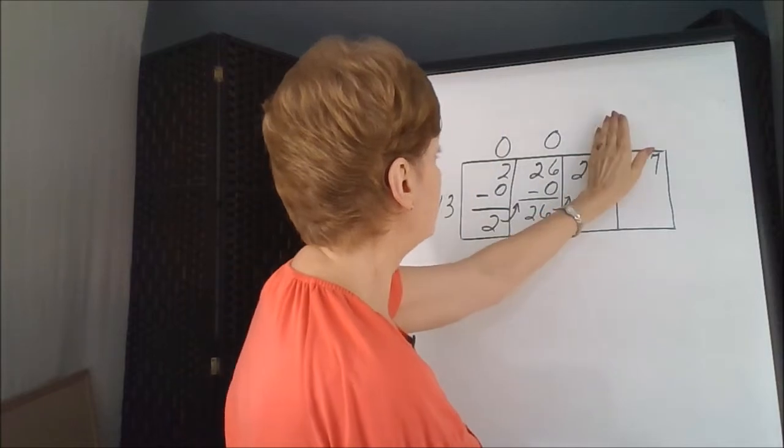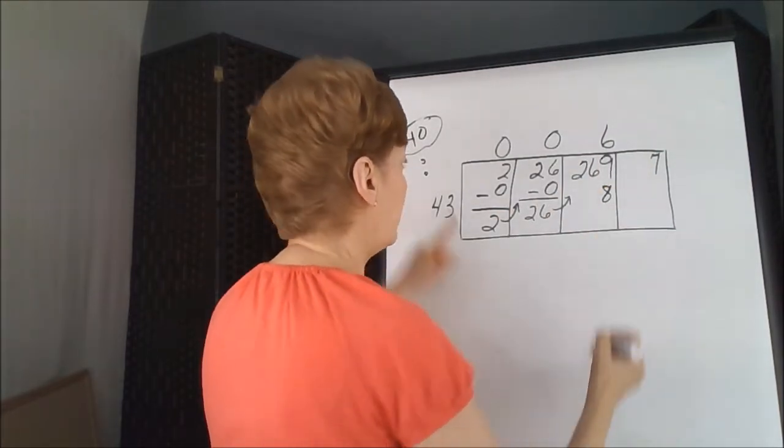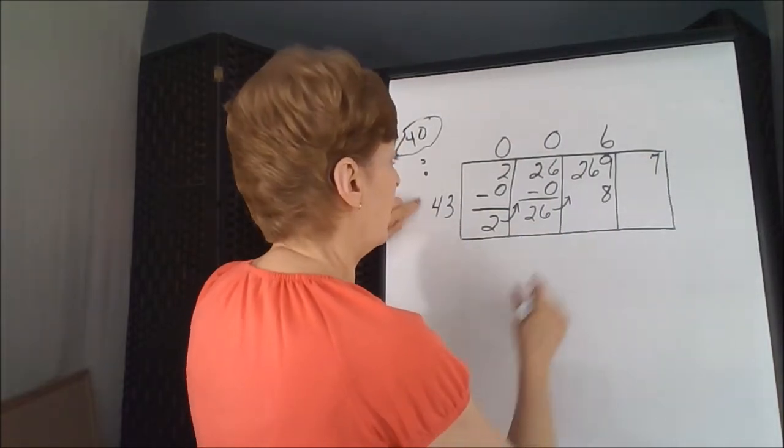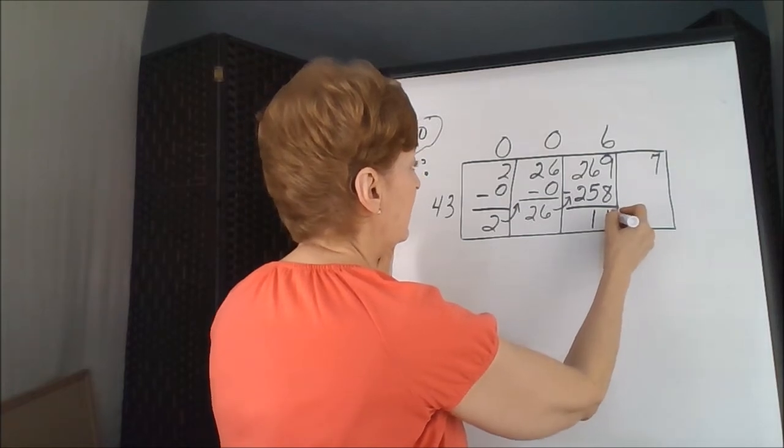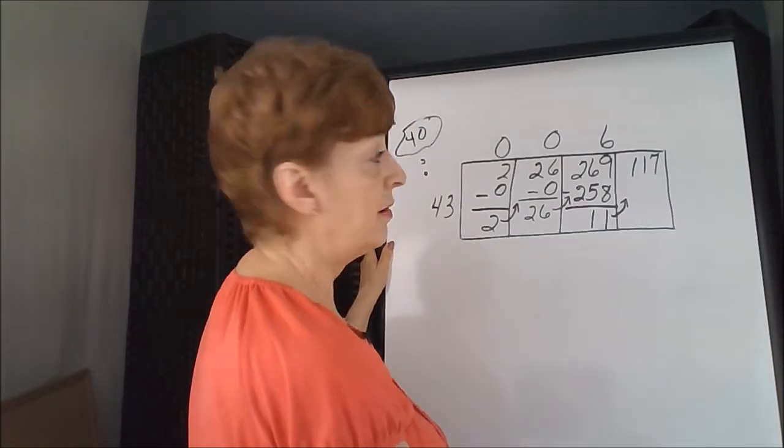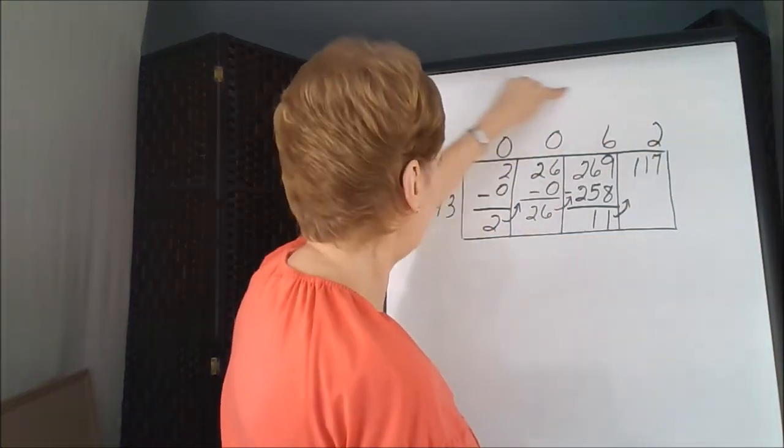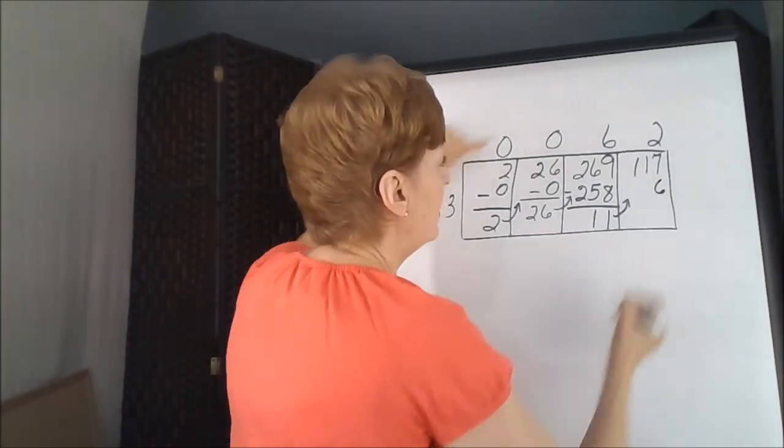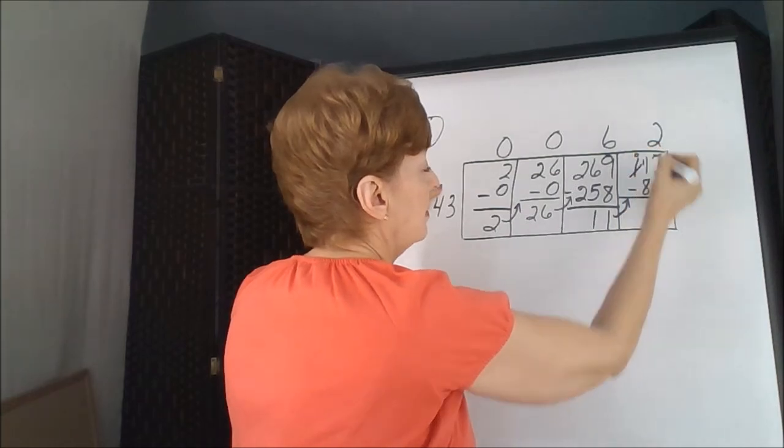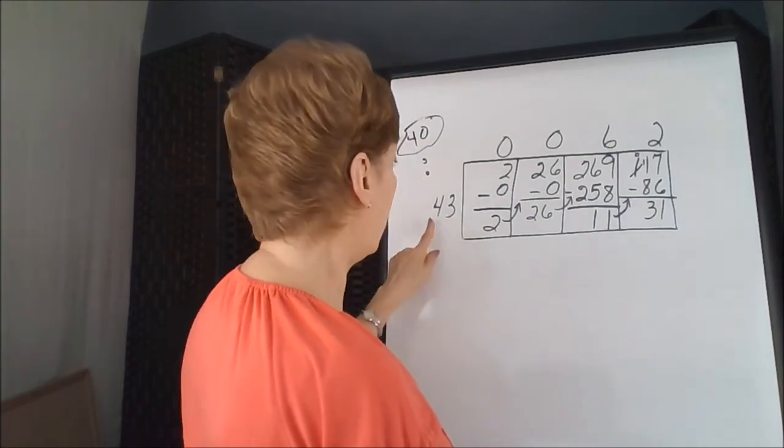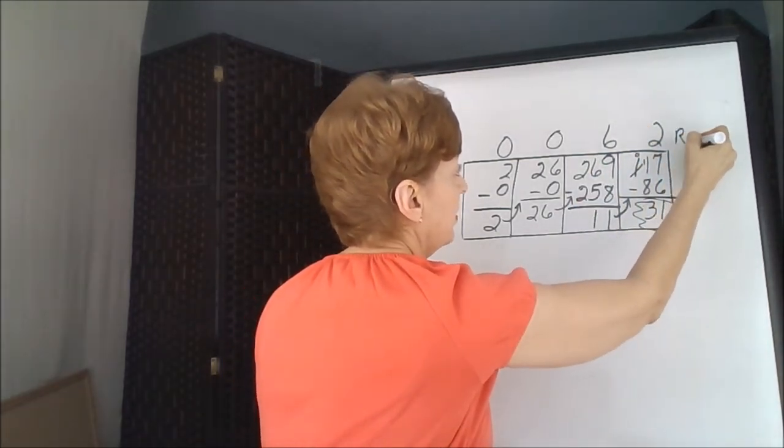Now, 4 goes into 2, no, 26, yes, 6 times. 6 times 3 is 18, carry 1, 6 times 4 is 24, and 1 more is 25. That is subtracted, we get 11. 11 is put forward into the last box to join up with the 7 that's already there. 4 goes into 11, 2 times. 2 times 3, which is in the ones column, is 6. 2 times 4 is 8. Subtract. 11 take away 8 is 3. 31 is smaller than 43, so we are done, that's the remainder, and the answer here is 62 remainder 31.